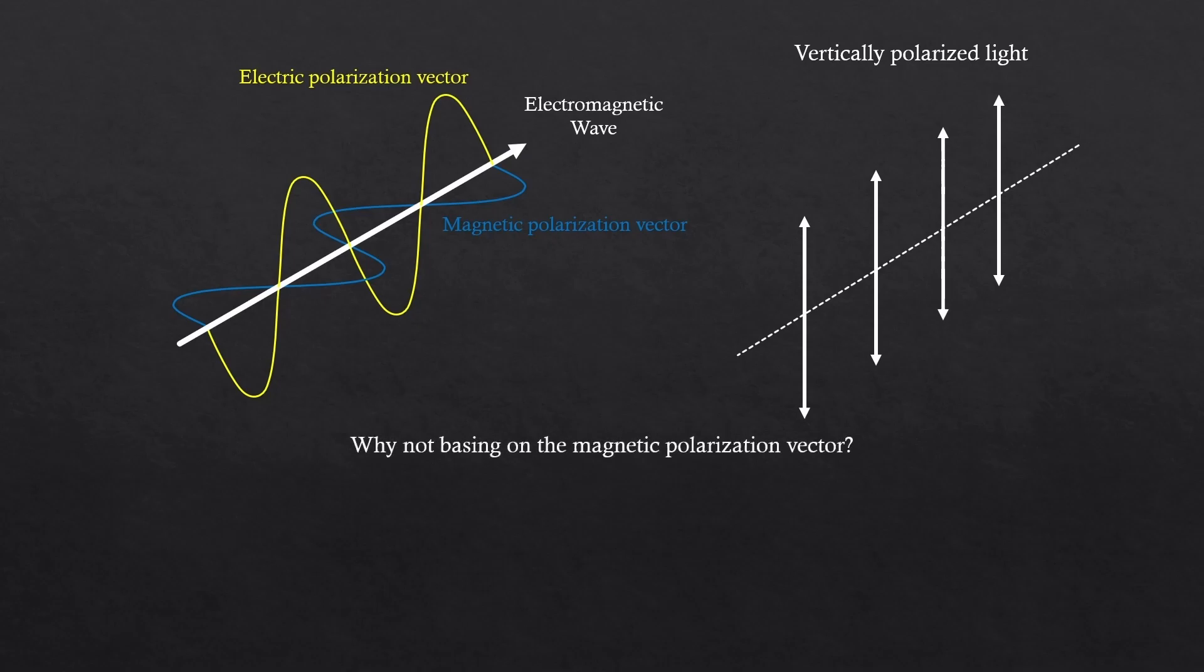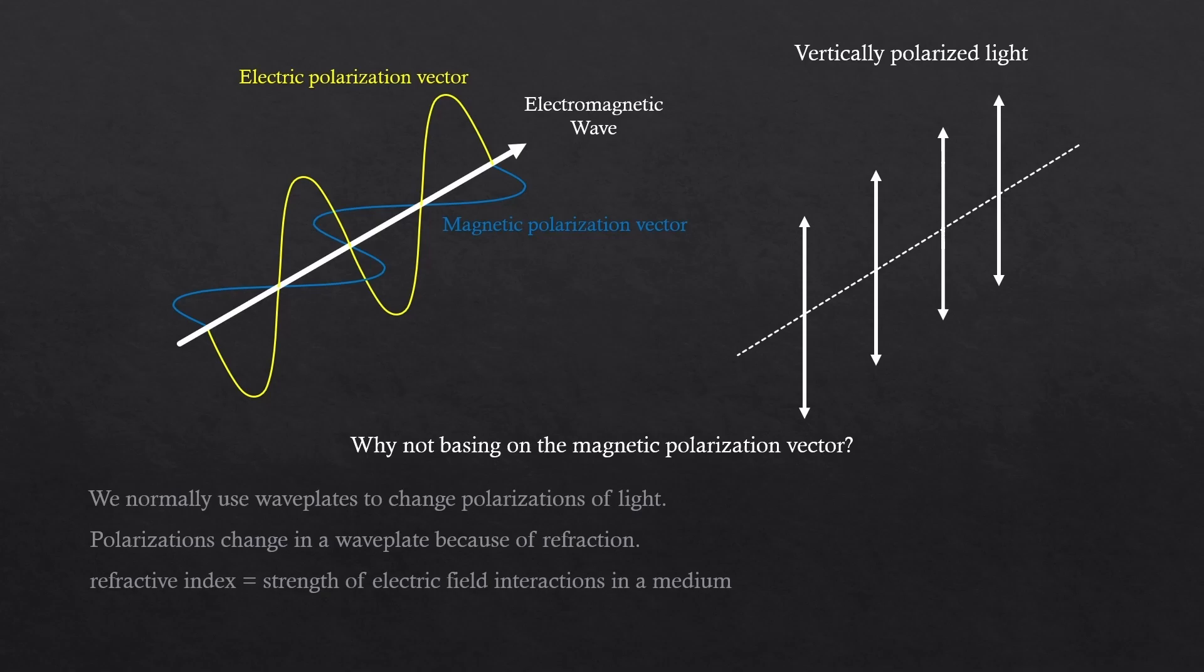And why people prefer the electric polarization over the magnetic polarization? We normally use waveplates to change polarizations of light. And polarizations change in the wave plate because of refraction. But the refractive index is about the strength of electric field interactions in the medium.